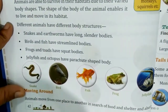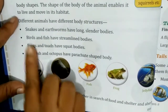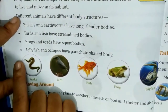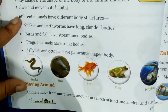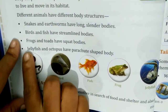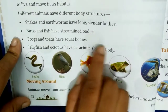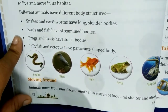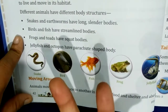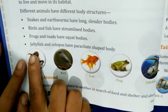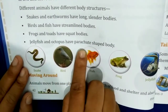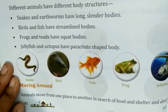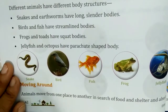Snake and earthworm have a long cylindrical body. Birds and fish have a streamlined body. Frogs, dogs and horses have a squat body. Jellyfish and octopus don't have any definite shape.